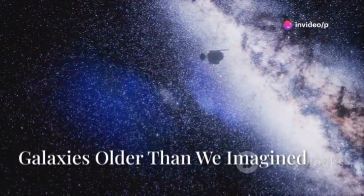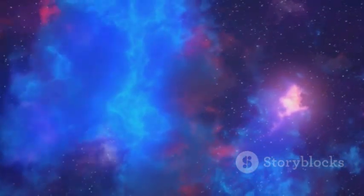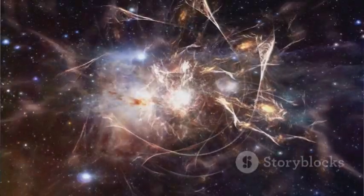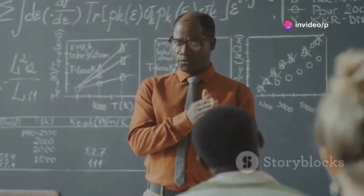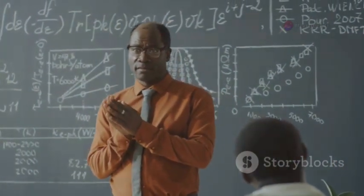Webb's first deep look shocked scientists. Instead of small, messy baby galaxies, Webb found large, bright, well-formed galaxies, much earlier than expected. Some, like Glass C-13, appeared just 300 million years after the Big Bang. This is like finding a grown tree days after planting a seed. Our model said it shouldn't be possible.